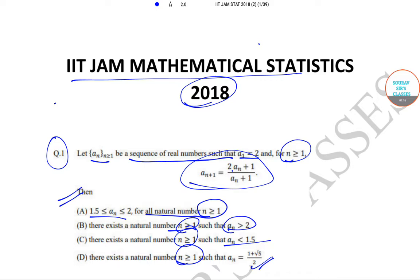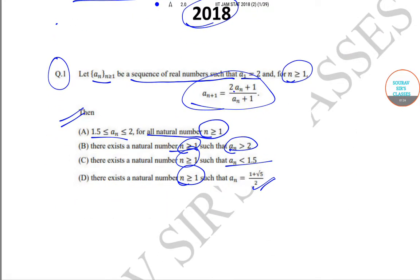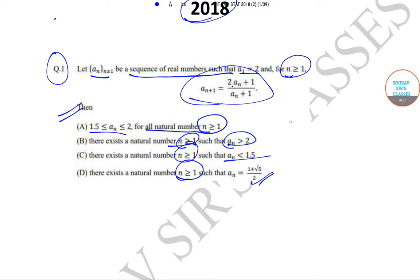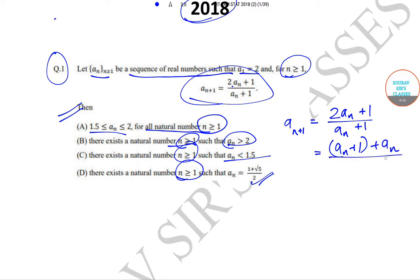So now let's try to solve this problem. We will break down a_(n+1). We have been given that a_(n+1) is equal to twice of a_n plus 1 by a_n plus 1, which we can write as (a_n plus a_n) upon a_(n+1), and this comes down to 1 plus a_n upon a_(n+1).